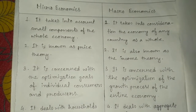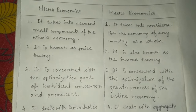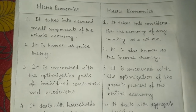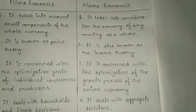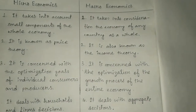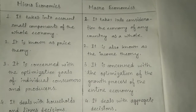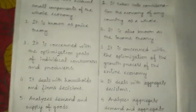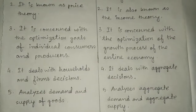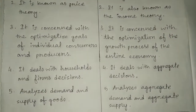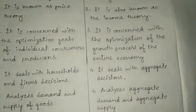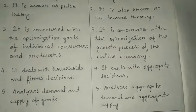Microeconomics is concerned with the optimization goals of individual consumers and producers. Macroeconomics is concerned with the optimization of the growth process of the entire economy. Microeconomics deals with household and farm decisions, while Macroeconomics deals with aggregate decisions.